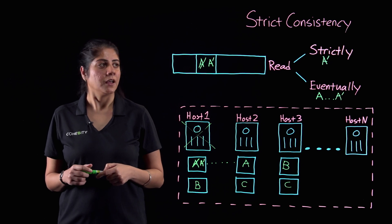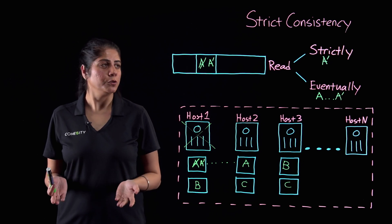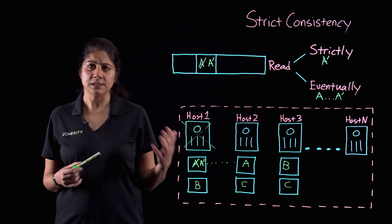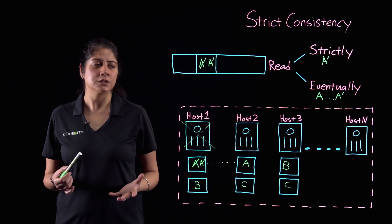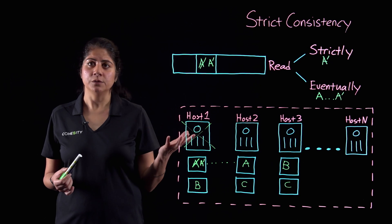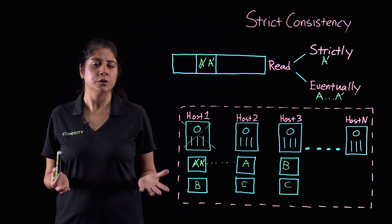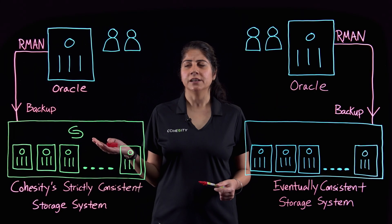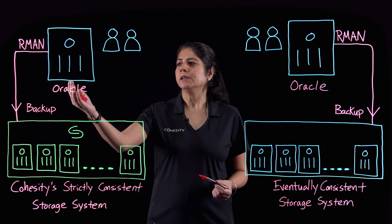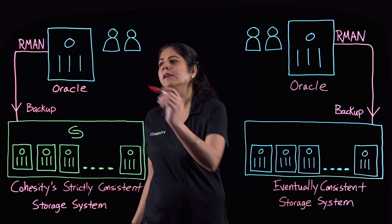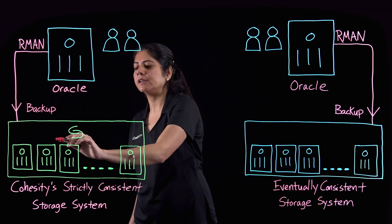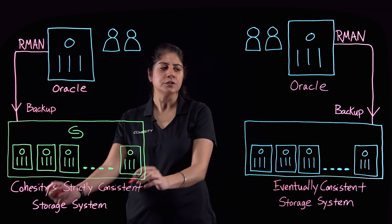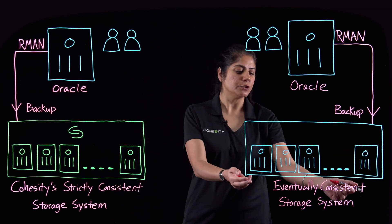That is why you want to go with a strictly consistent storage system. Now let us consider two examples with backups and restores. Consider an example where an Oracle database is being backed up using Oracle RMN to secondary storage — this being Cohesity's strictly consistent storage system, and the other being some other vendor's eventually consistent storage system.